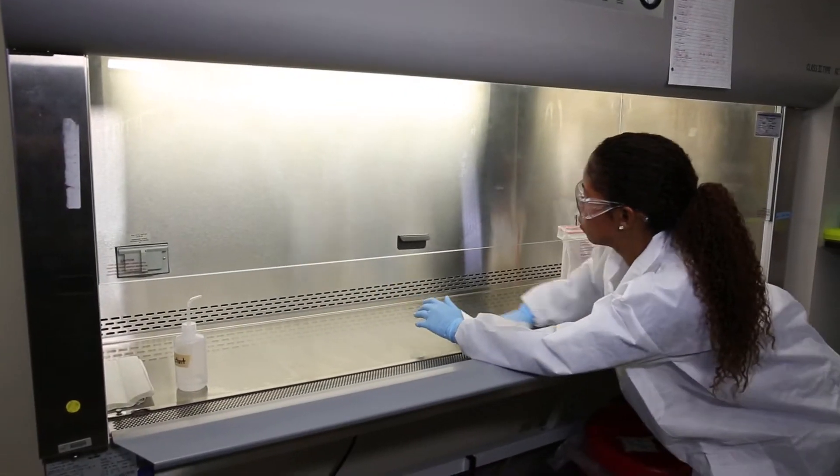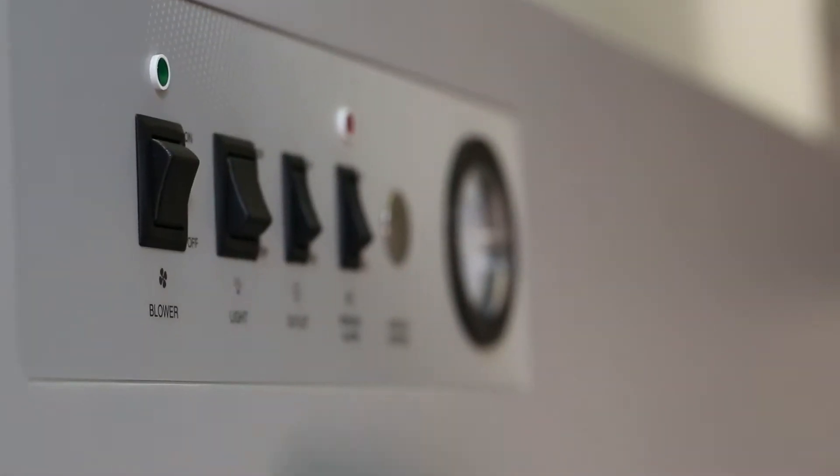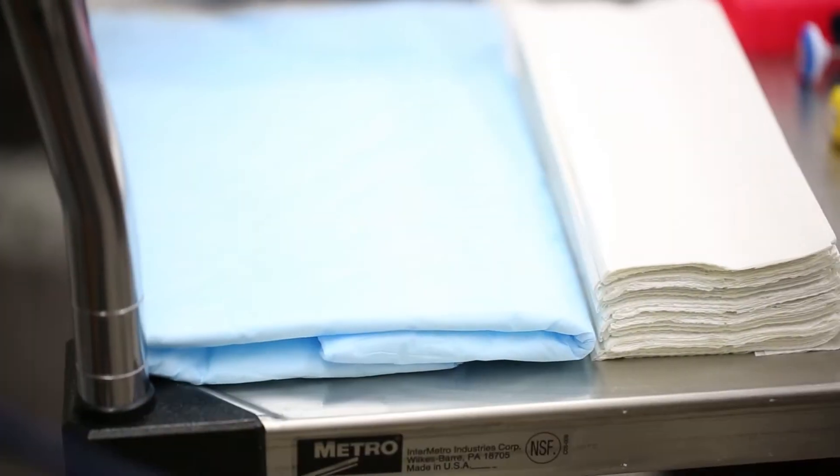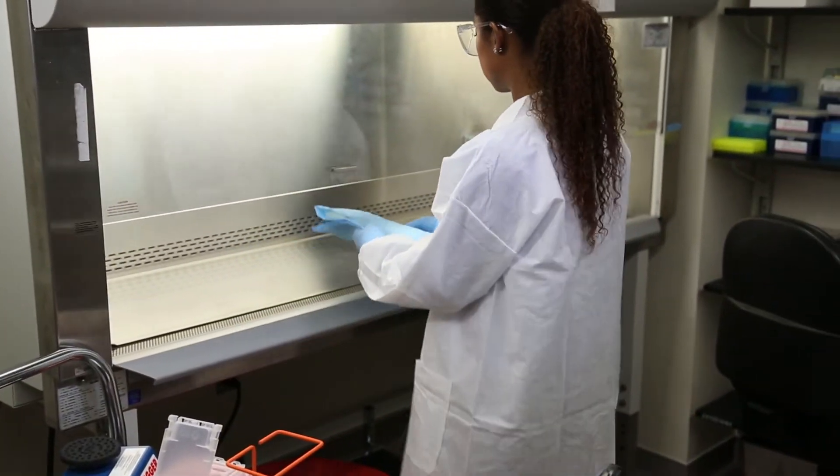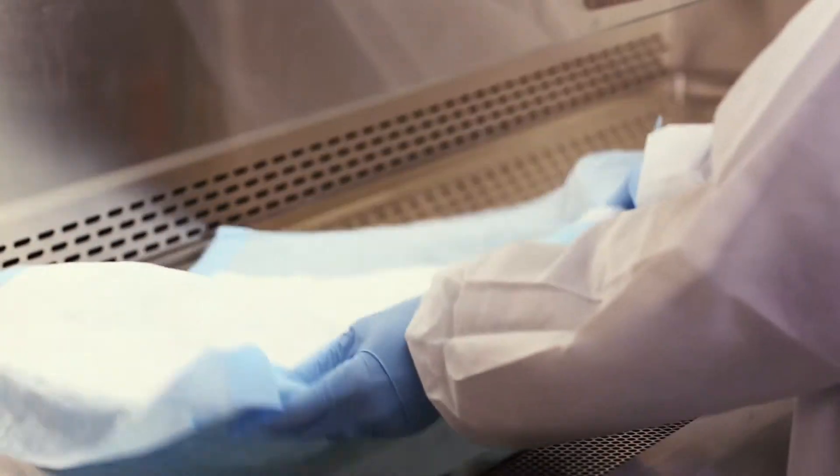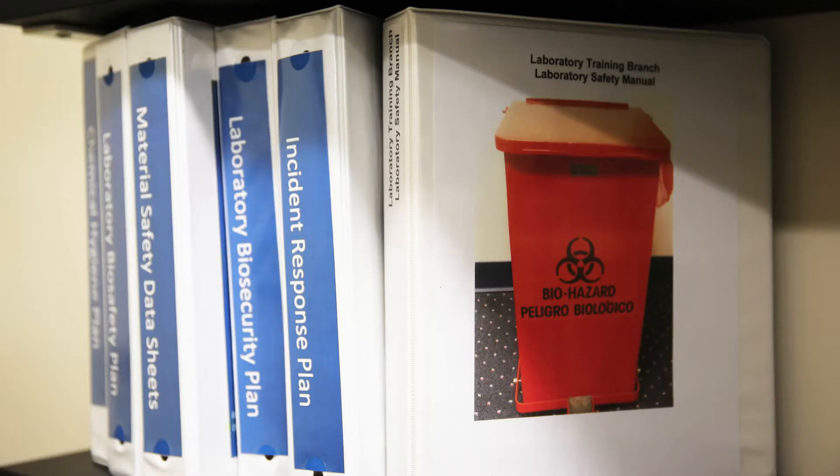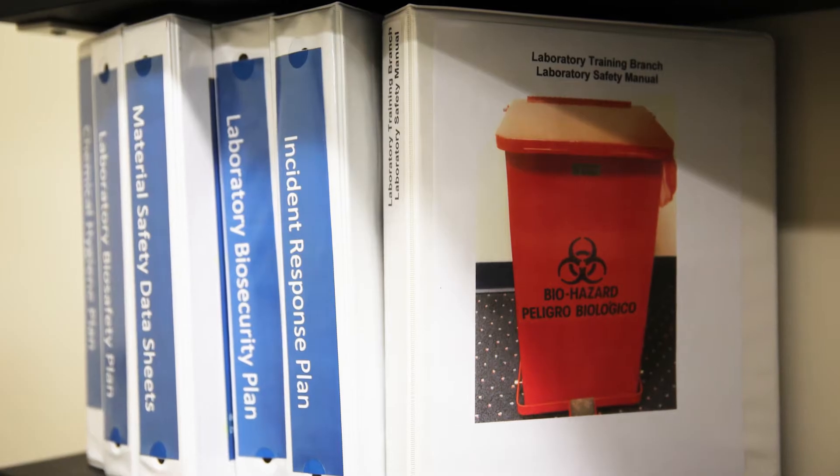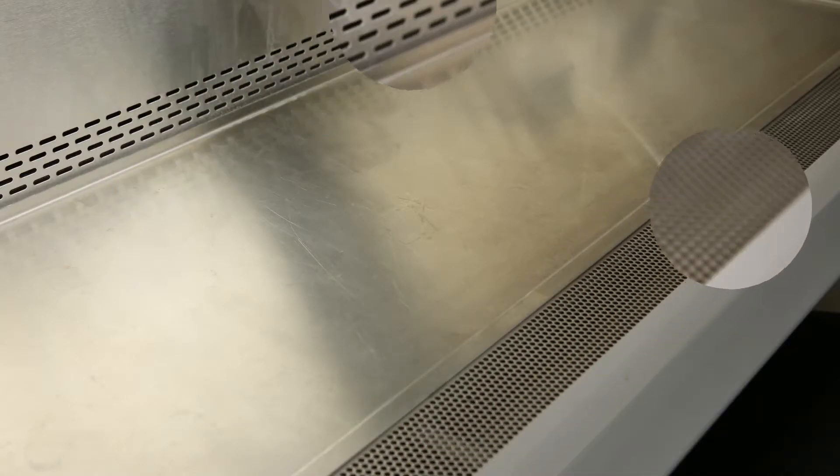After you have completed your initial decontamination, preparation, and checks of the BSC, you can begin work. Remember to wear PPE appropriate for the work you will perform. Some groups require that you line your immediate work area with absorbent plastic-backed material to prevent contamination of the work surface and facilitate cleanup. That practice is determined by a risk assessment and SOPs, but do not allow this material to block the front or rear air grills.